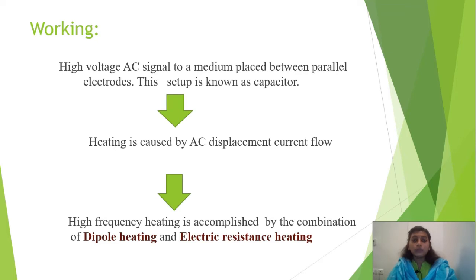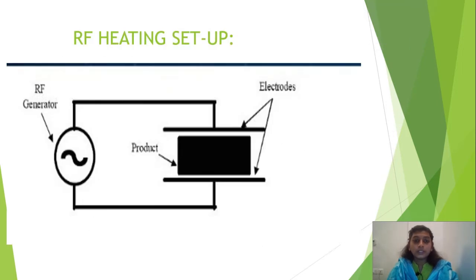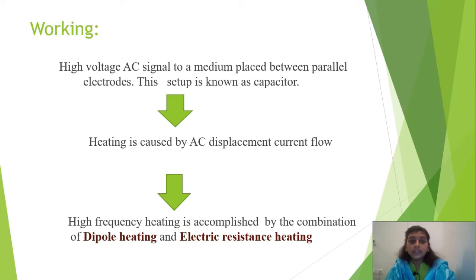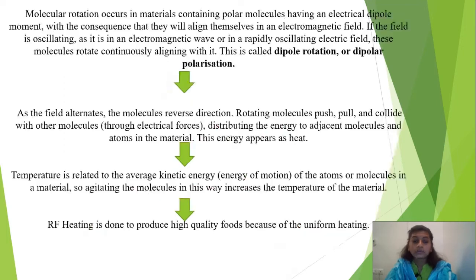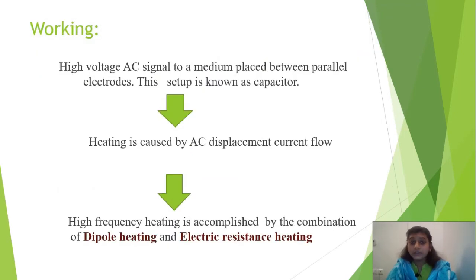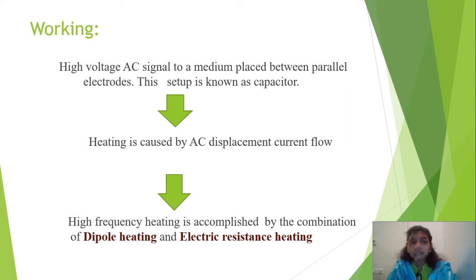How does RF actually work? First, the setup: there will be a generator and electrodes, and the product is placed between the electrodes. A high voltage AC signal is applied to a medium placed between parallel electrodes. Between the electrodes there will be energy storage. This setup is known as a capacitor — the energy is already stored there.